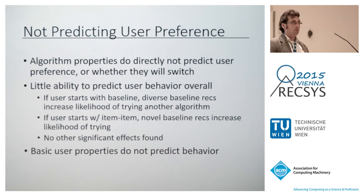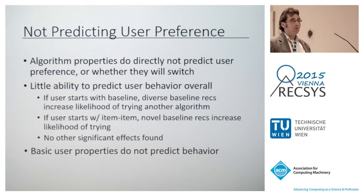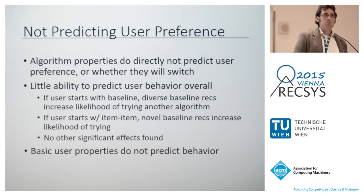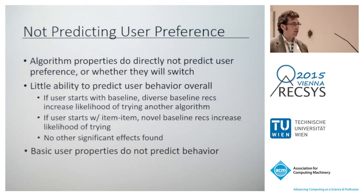We found nothing collected that robustly predicted user behavior. Basic user properties like age, account age, diversity of ratings, and number of ratings did not predict which algorithms they'd prefer. We found a few minor effects — like users being more likely to switch away from the baseline if it's more diverse — but these are niche and hard to generalize.